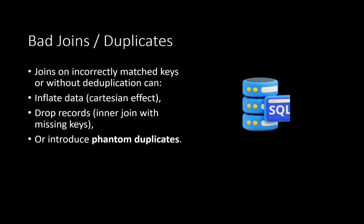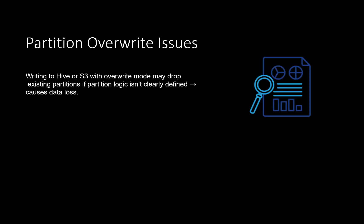Bad joins and duplicates are also a big problem. If we do not select join keys correctly, it can lead to cartesian products, which will cause the data to humongously inflate. Inner joins with missing keys can drop records and introduce duplicates. There is a heavy price to pay if joins and join keys are not selected properly. Additionally, partition overwrite is risky — if we have not paid attention to our partition logic, overwriting a partition may entirely drop data and cause data loss.